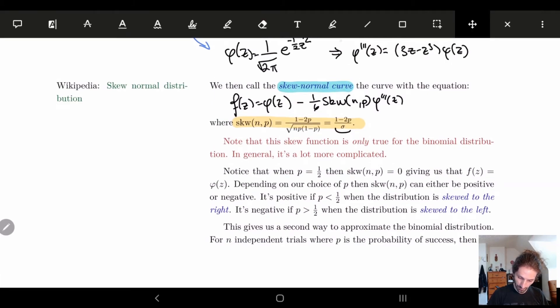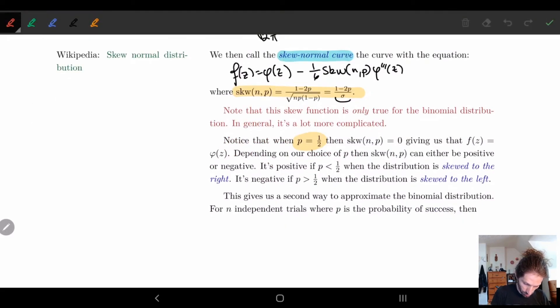So notice that what we have is when I set p equal to 0.5, let's see what happens here. So if I take skew(n,p), this is equal to (1 minus 2p) divided by σ. Well, if I look at p, I have 0.5.